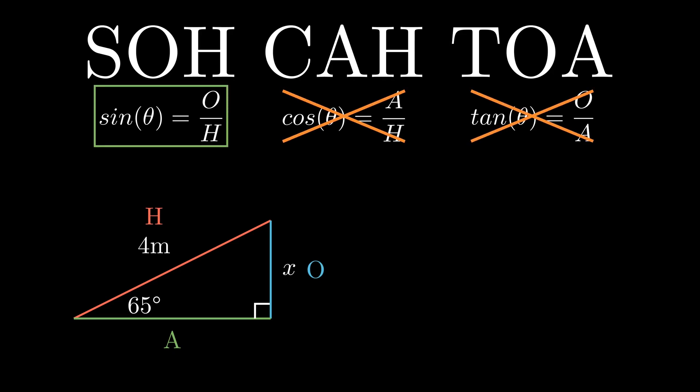To solve, we select sine, cos or tan, depending on the information given. In our case, we have a 4m long hypotenuse, an angle of 65 degrees, and we're asked to find the side length opposite our angle. So we pick sine, substitute the information in, rearrange the equation, plug 4 times sine of 65 into our calculator, and we get 3.63m. Now this is great, but let's get some context to see exactly why sine is giving us the answer here.